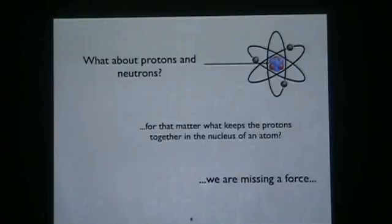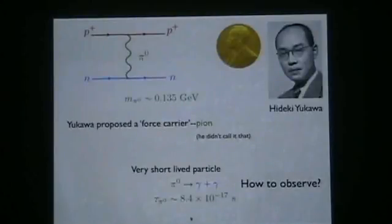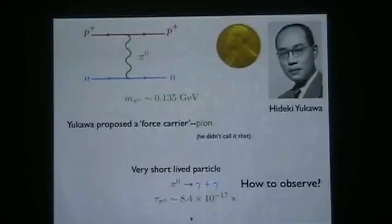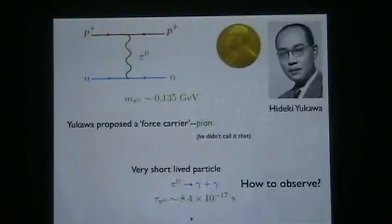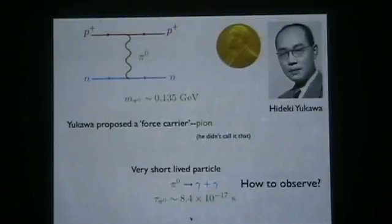What keeps the protons together in the nucleus of an atom tells us our model of physics is still missing a force. That force was introduced by Hideki Yukawa, who proposed that protons and neutrons interact through particle exchange — there must be a force carrier mediating this. He introduced a force carrier particle, eventually called the pion. The pion is just like the W and Z bosons — it's massive, so this force is short range, and the pion decays rapidly with a lifetime of about 10⁻¹⁷ seconds.